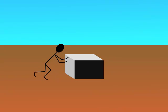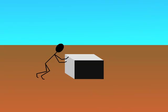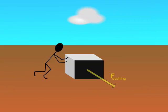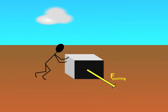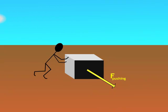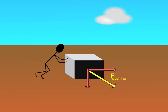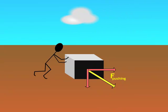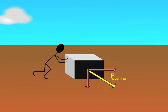Look at this poor guy pushing this crate on this hot sunny day. He thinks he's working really hard, but in reality he doesn't realize he's pushing on an angle. And so in physics, we only give him credit for the force he applies in the direction of motion.